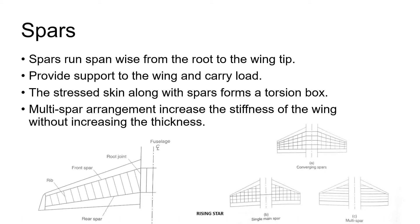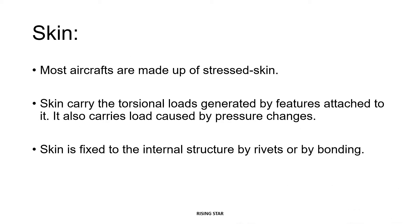Some aircrafts, like high-speed aircrafts, also have a multi-spar arrangement which helps to increase the stiffness of the wing without increasing the thickness, which is very beneficial. Having a multi-spar wing also increases the structural redundancy and tolerance to battle damage.